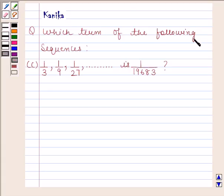The question says which term of the following sequences: 1 by 3, 1 by 9, 1 by 27 and so on is 1 by 19683.